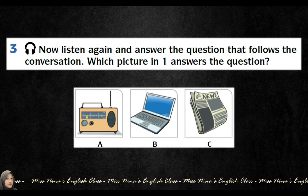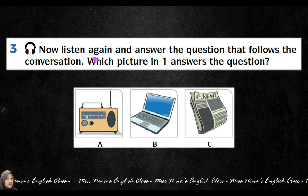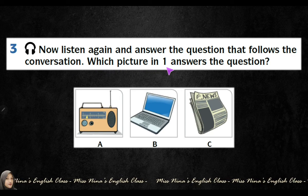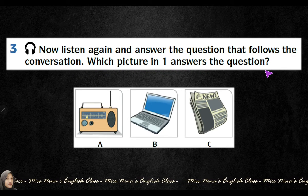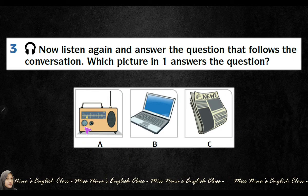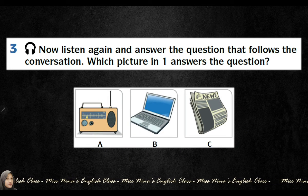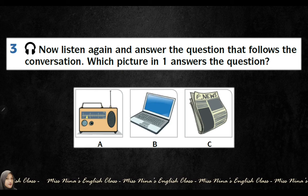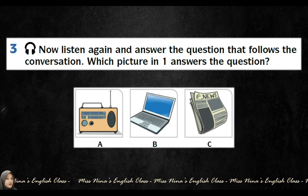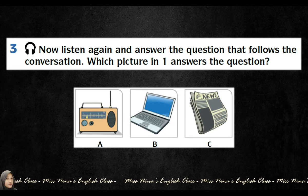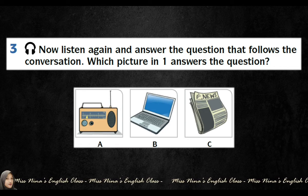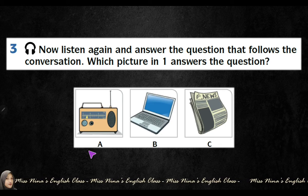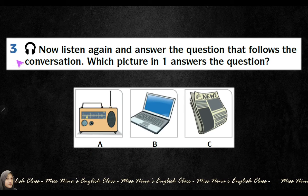Let's move on to activity number three. Listen again and answer the question that follows the conversation — which picture in one answers the question? You are still using the same pictures, but the question is not written here. You have to listen to the audio recording again, and at the end of the dialogue you will hear the question. Use that question and choose the answer — A, B, or C — from the pictures.